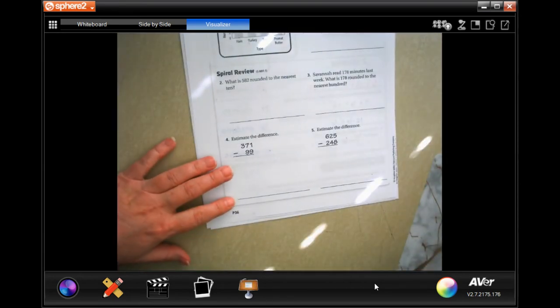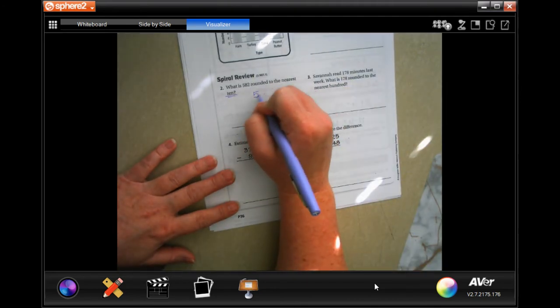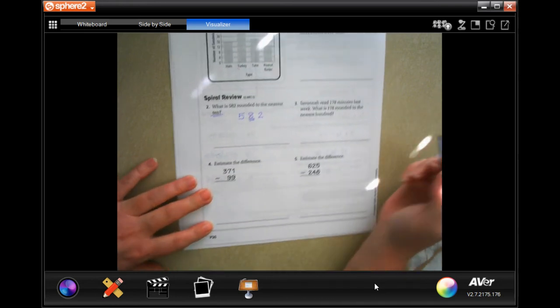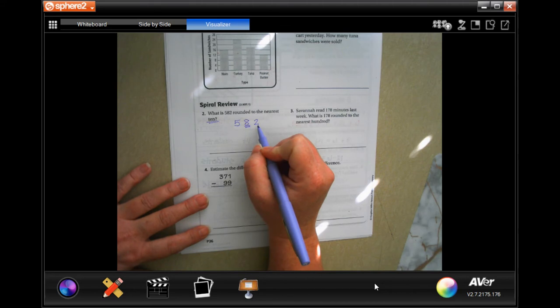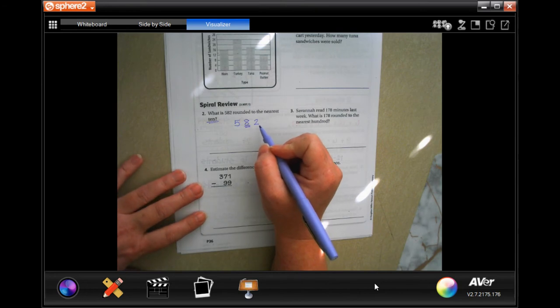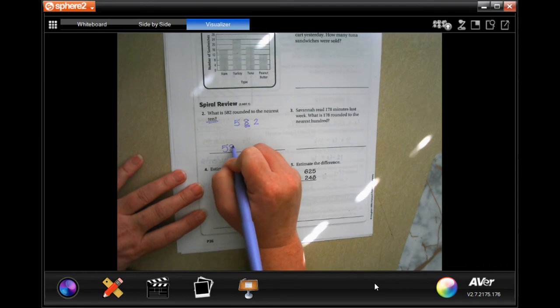It says what is 582 rounded to the nearest ten? Five eight two and we're rounding it to the eight. So we're going to look at the two. If it's five or bigger then we're going to make that eight go to a nine. If it's not it's going to stay the same. Two is smaller than five so we're going to keep it an eight. 580.